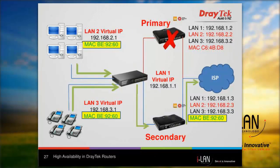When a hardware failure occurs, the primary router goes offline and the secondary router takes over. It updates its MAC address to the LAN clients, so the virtual IP address will now have the MAC address of the secondary router.